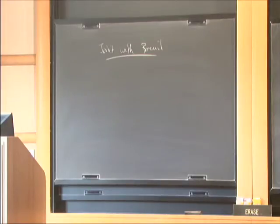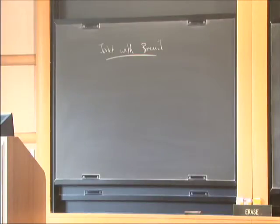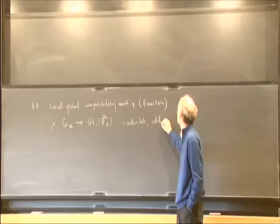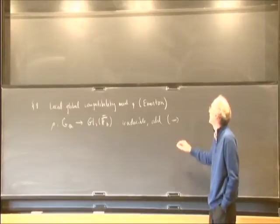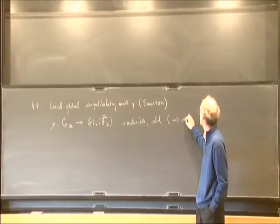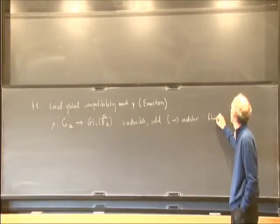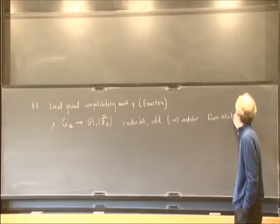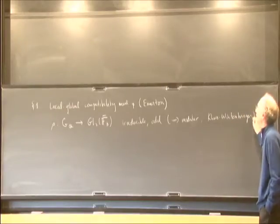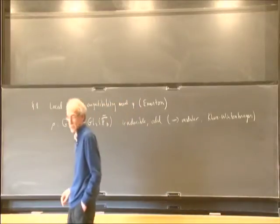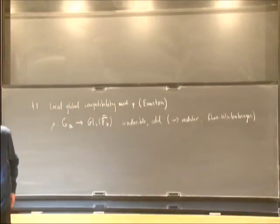If rho is a mod P Galois representation of the absolute Galois group of Q, irreducible and odd, which we know by Serre's conjecture — the theorem of Khare-Wintenberger — implies that it's modular in the sense that it arises from a modular form. So it arises in the cohomology of modular curves.